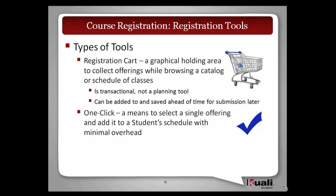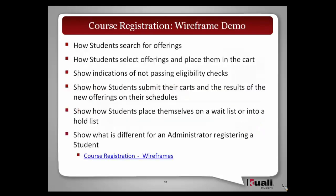Another tool we have nominally called 'one click' — the name may change due to trademark concerns — is really the idea that there's not much overhead. It's about taking a single offering and adding it to the student's schedule, with all required eligibility checks applied. Christina will now demo the wireframes for registration, covering how students search for offerings, select them and place them in their cart, what eligibility failure indications look like, how students submit carts, how they join hold or wait lists, and what the administrator view looks like.